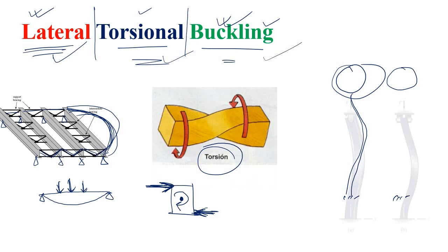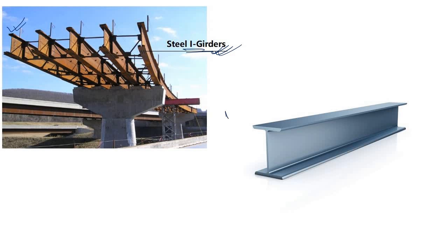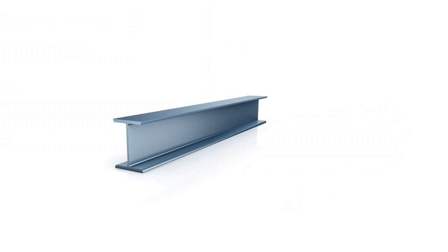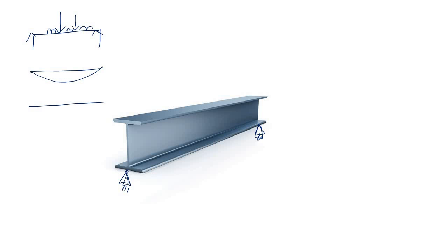Let's continue our discussion using the I-section to find out why lateral torsional buckling happens. Consider a simply supported I-section beam. If you apply a vertical load, it will bend and produce a bending moment diagram something like this.